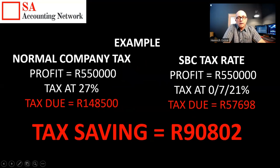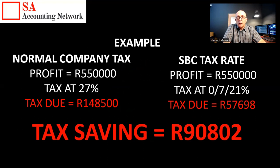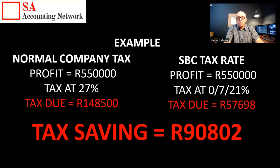Looking at an example: under normal company tax at 27%, if you've got a profit of R550,000, the tax you would have to pay is R148,500. But if you use the Small Business Corporation tax rates on that same R550,000 profit — using the variable rate where the first R95,000 is zero, then 7%, then 21% — the total tax due is only R57,698, which gives you a tax saving of almost R91,000. That is a really big tax benefit for any small business that can qualify for these lower tax rates.